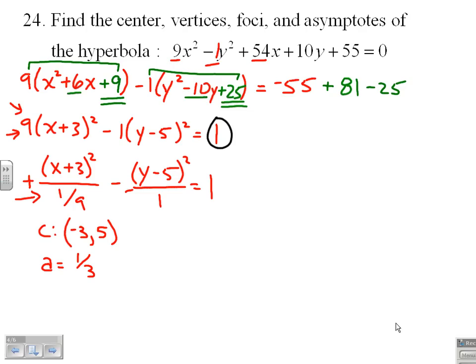The negative term over here, 1 is b², so b is 1. And I know that in a hyperbola, the Pythagorean relation is c² equals a² plus b², or in this case, c² equals 1/9 plus 1, or c ends up equaling square root of 10 over 3.